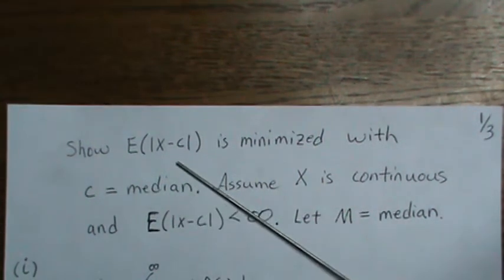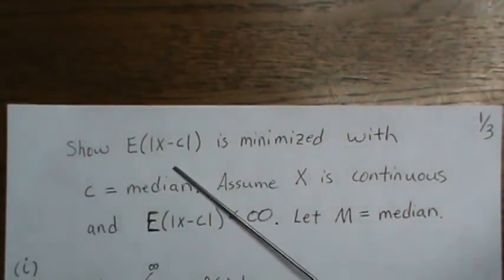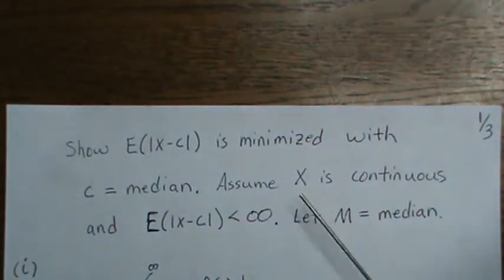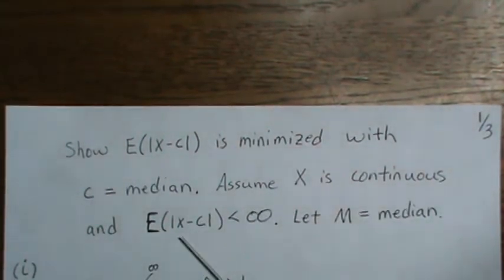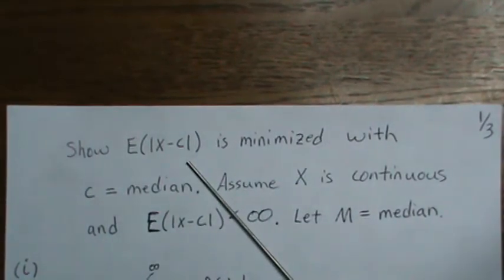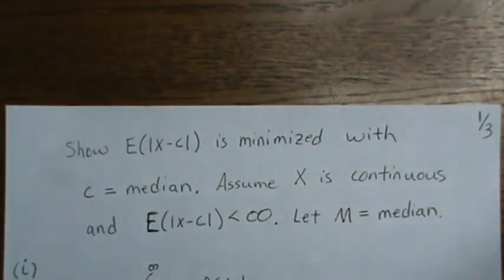In this video, we're going to show that absolute loss is minimized by the median, which is the expected value of this absolute value. We're going to assume x is continuous — we'll probably put a video out for x discrete, but for now we'll do continuous. We're also going to assume that this expectation is finite. We're going to prove this three different ways, and the second method assumes that we pass the derivative through the expectation, which requires it to be finite.